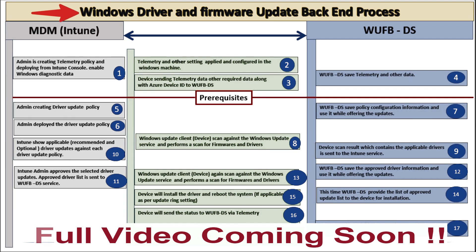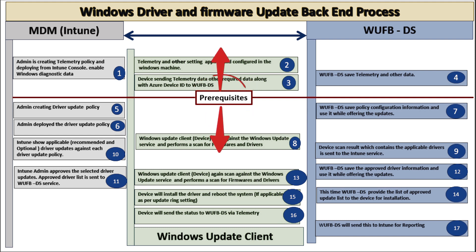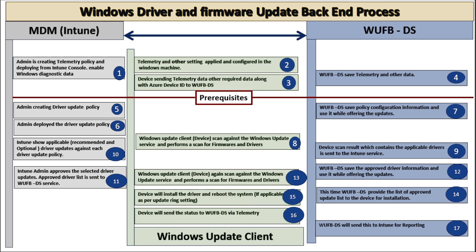Now let's talk about the Windows drivers and firmware updates backend flow. I have divided the entire backend process flow into two phases: the first phase is before confirming the prerequisites, and the second phase is after. There are mainly three key players involved: the first is Intune, the second is the Windows Update for Business Deployment Service, and the third is the Windows Update client, or the device where we want to install the driver updates.